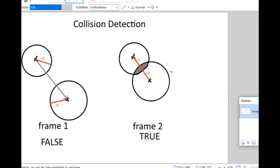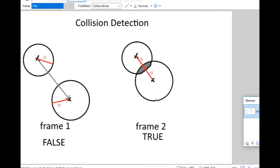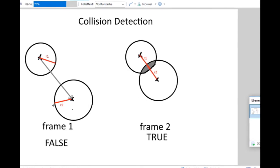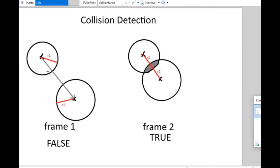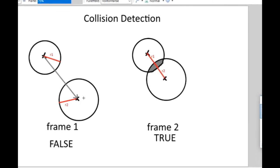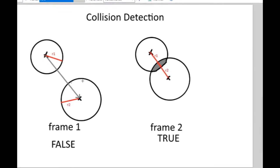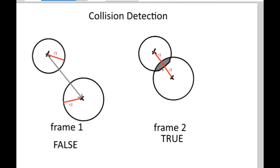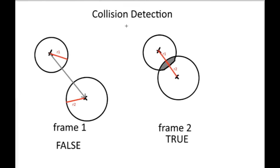The collision detection will return true if the two balls are overlapping and return false if they are not. It will check the distance between the central points of two circles and compare it to the sum of the two balls' radiuses. If the sum of the radiuses is larger than the distance, then there is an overlap so the balls are colliding and the function will return true.